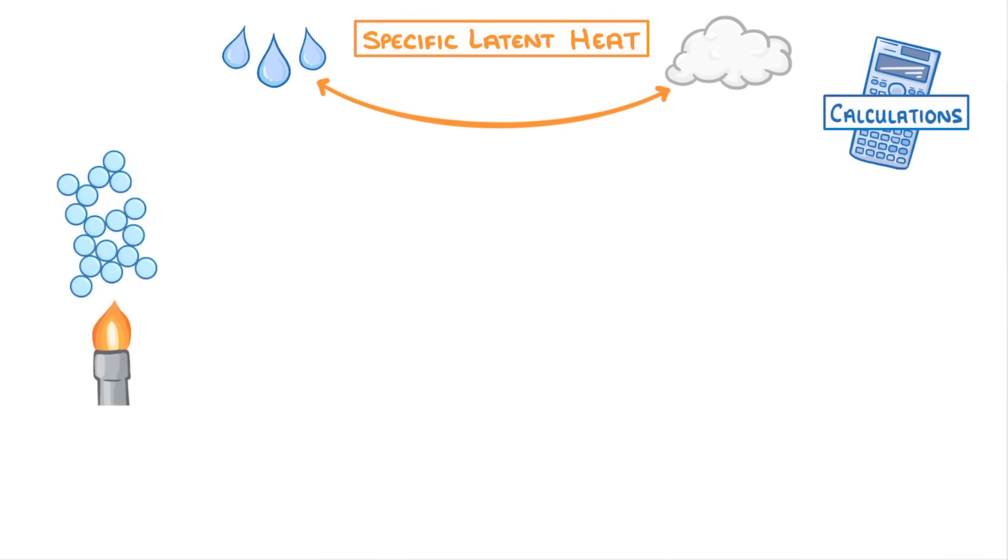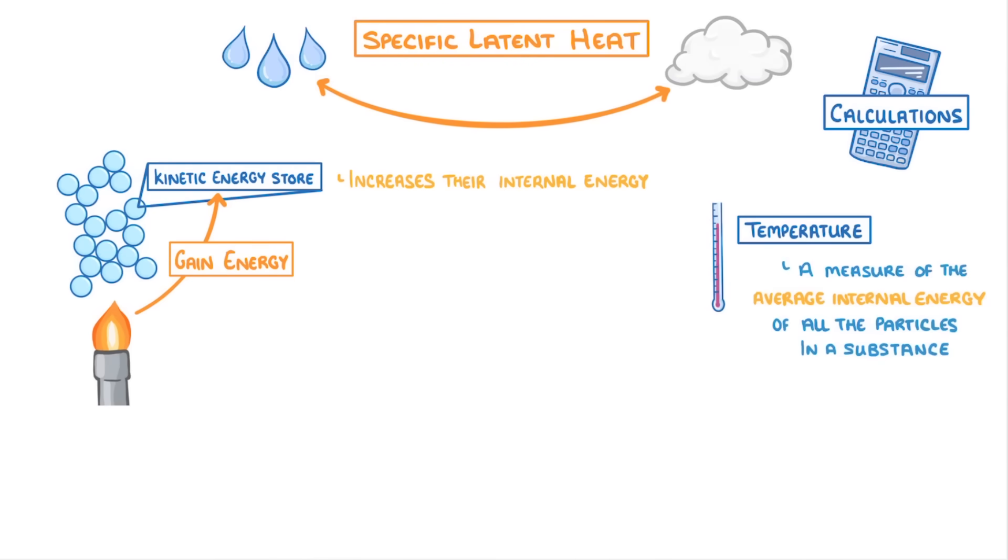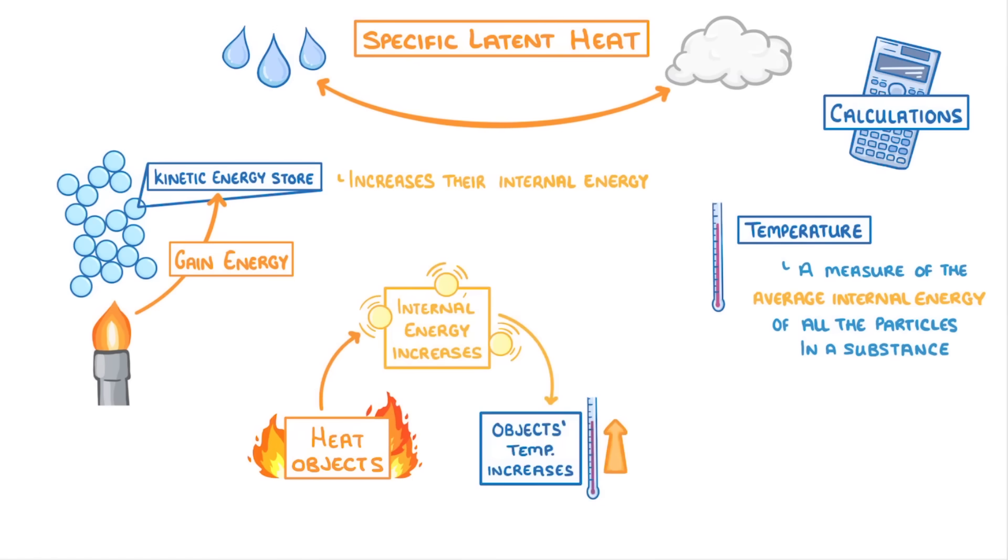We saw in the last video that as we heat up a substance, the particles gain energy in their kinetic energy store, and this increases their internal energy. We also saw that temperature is just a measure of the average internal energy of all the particles in a substance. So as we heat objects, and the internal energy of their particles increases, the object's temperature increases as well.